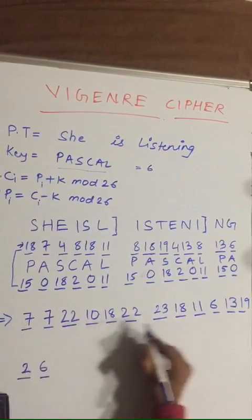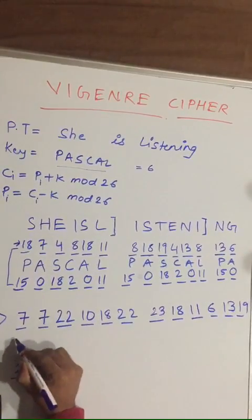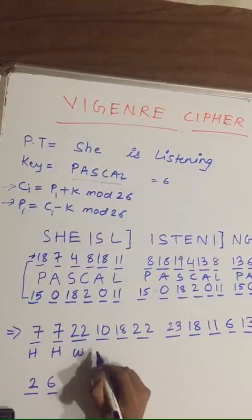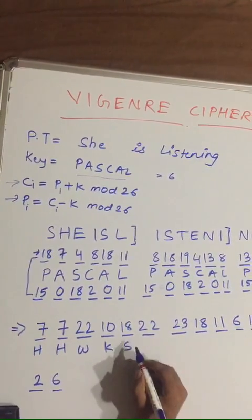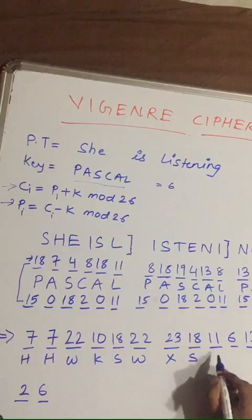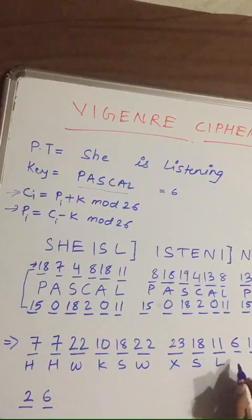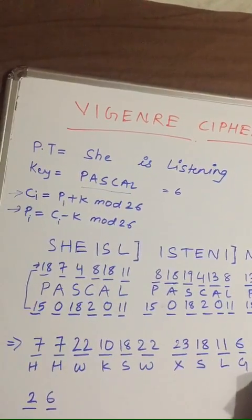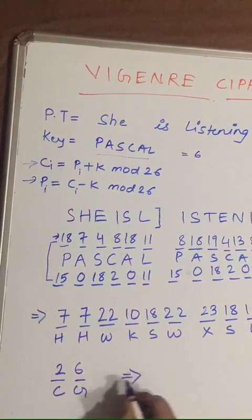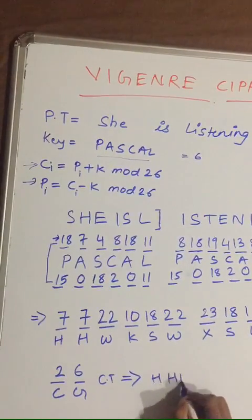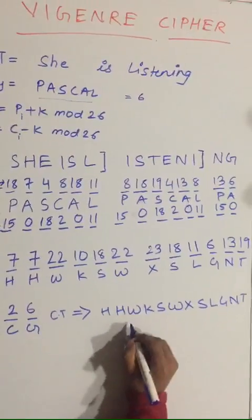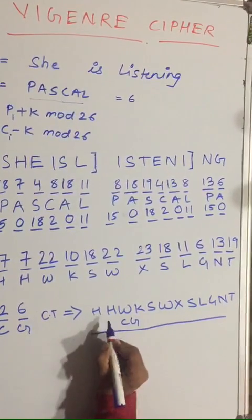Now convert these numeric ciphertext values back to alphabetic form. 7=H, 7=H, 22=W, 10=K, 18=S, 22=W, 23=X, 11=L (wait, shown as S), 6=G, 13=N, 19=T, 2=C, 6=G. So your ciphertext is H-H-W-K-S-W-X-S-L-G-N-T-C-G.